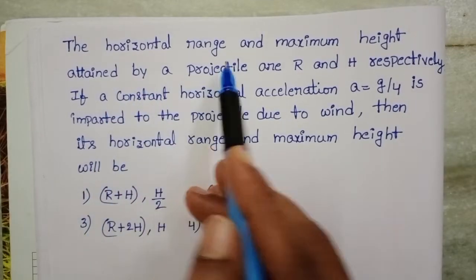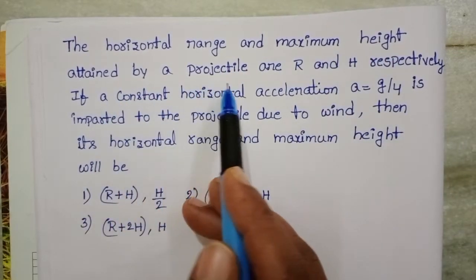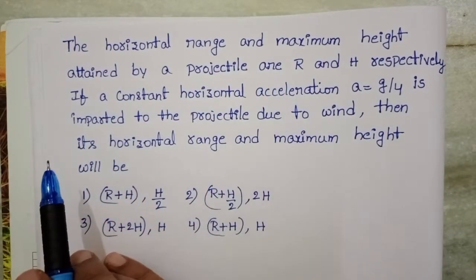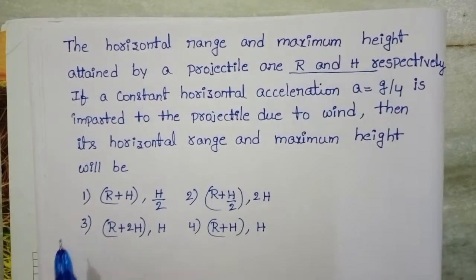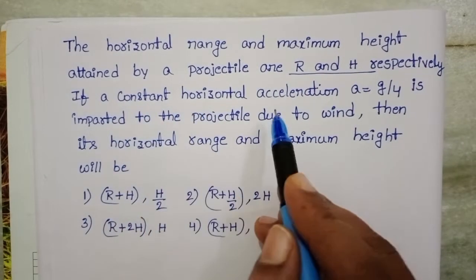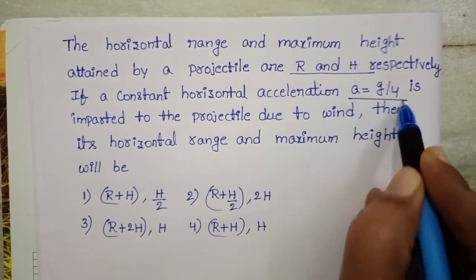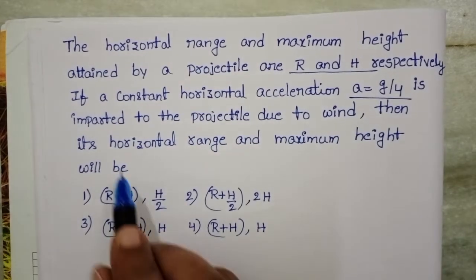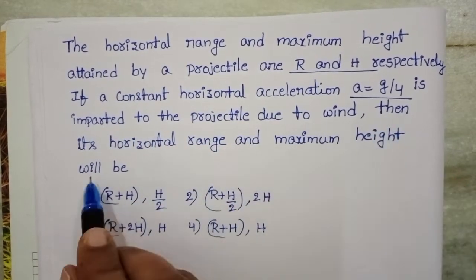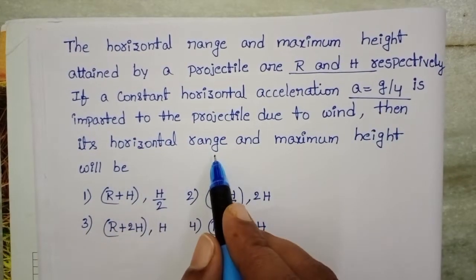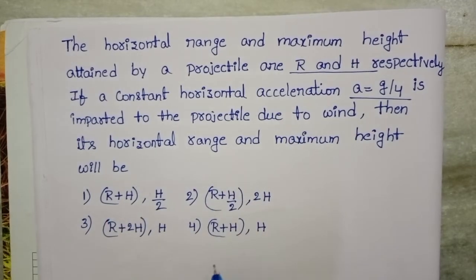The horizontal range and maximum height attained by a projectile are R and H respectively. If a constant horizontal acceleration A = G/4 is imparted to the projectile due to wind, then its horizontal range and maximum height will be?